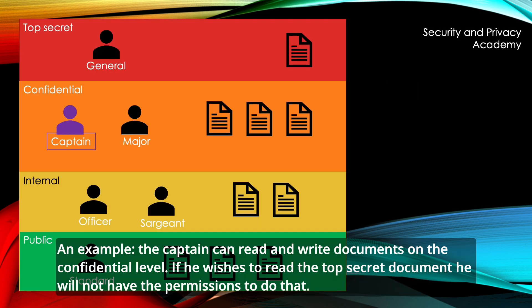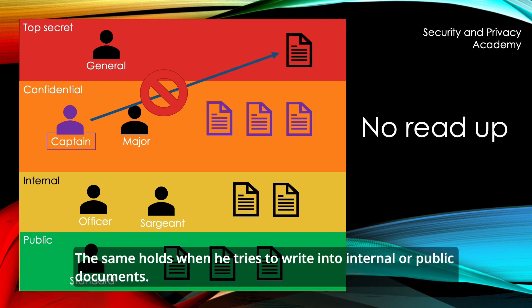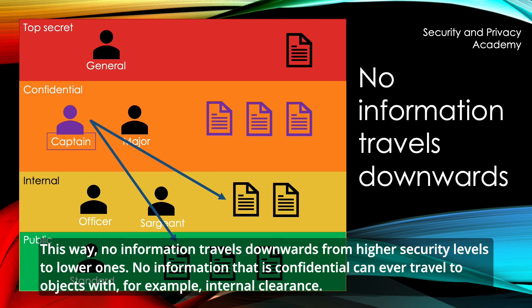An example: the captain can read and write documents on the confidential level. If he wishes to read the top secret document, he will not have the permission to do that. The same holds when he tries to write into internal or public documents. This way, no information travels downwards from higher security levels to lower ones — no information that is confidential can ever travel to objects with, for example, internal clearance.